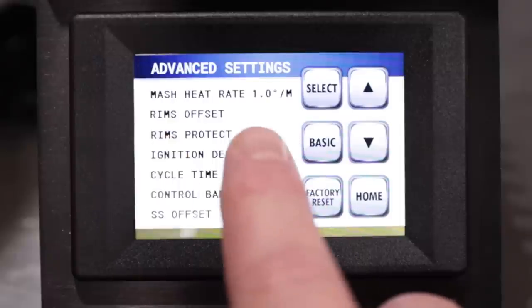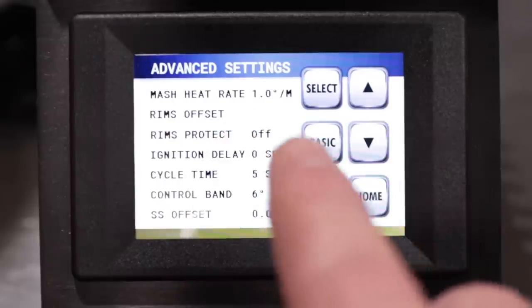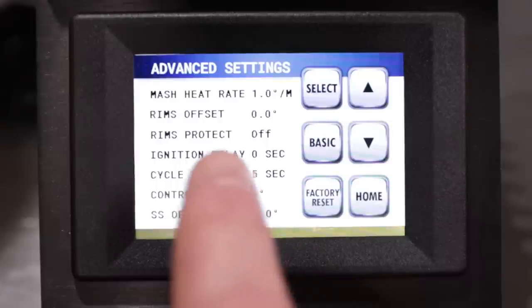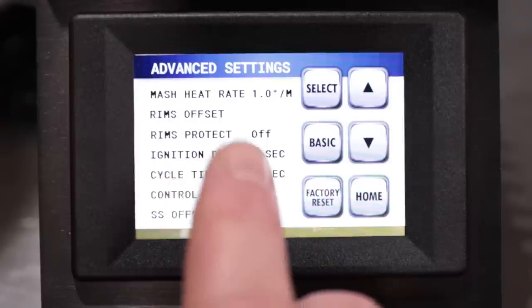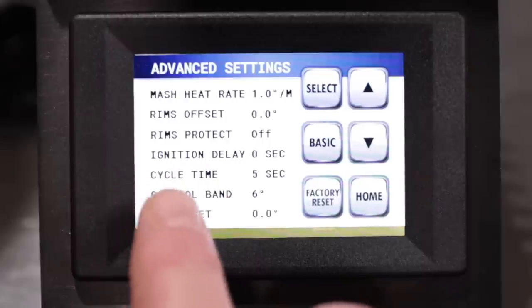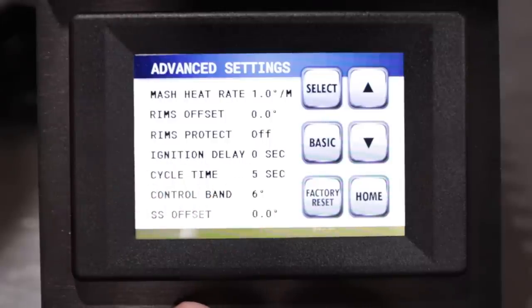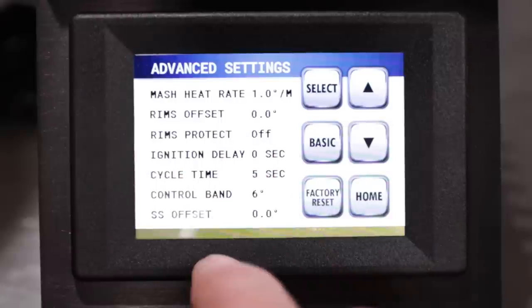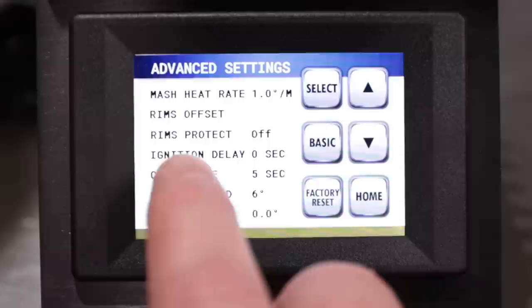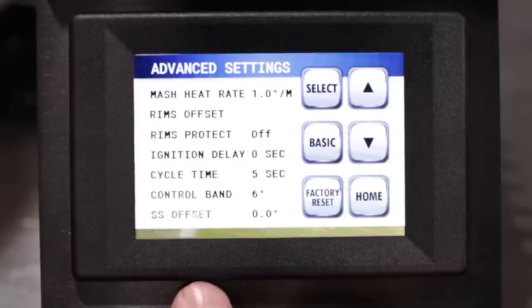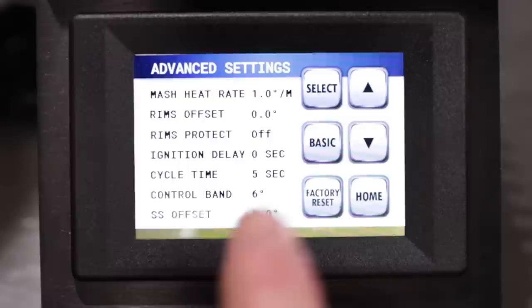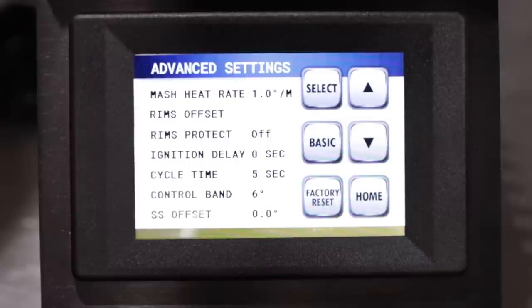Again, this is just an offset for what your hot liquor tank is versus what your mash is. So you want to have some sort of measurement in your mash to be able to tell what the current mash temperature is versus what the HLT. Generally there is a couple degree loss between the two. So again, this is where you're going to dial that in so that your reading on the screen on the brew commander is the same reading as what your mash temperature is. And that's pretty much about all you need to adjust for the HERMS system at this point.